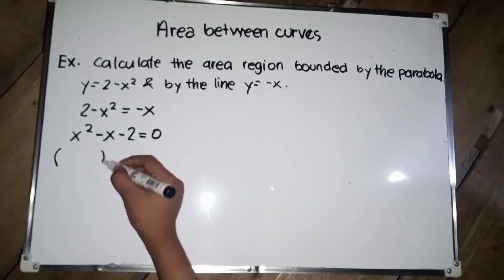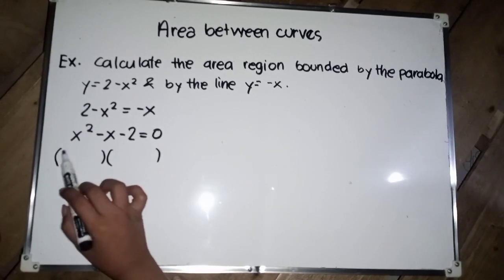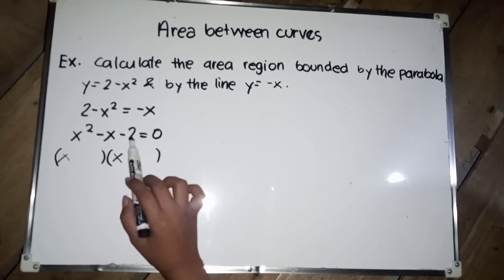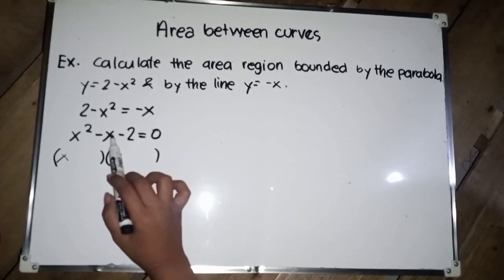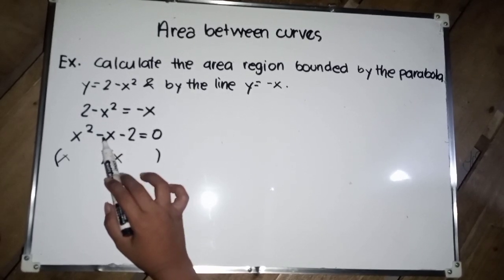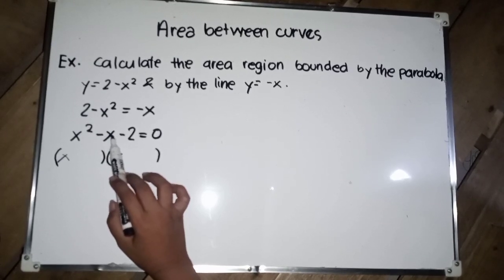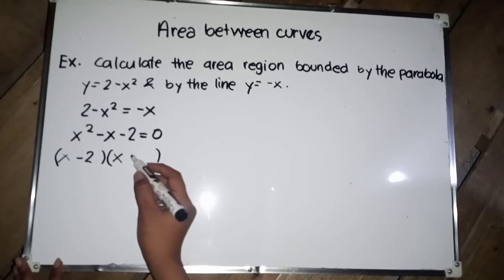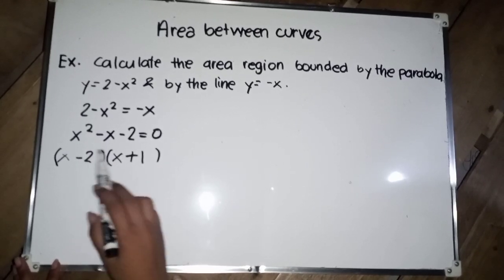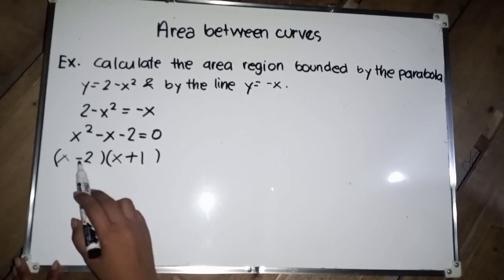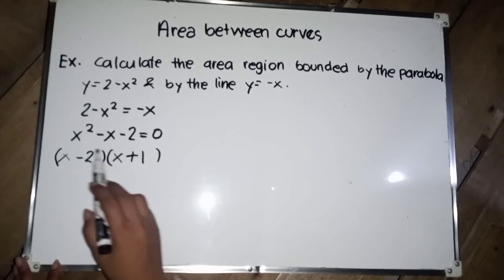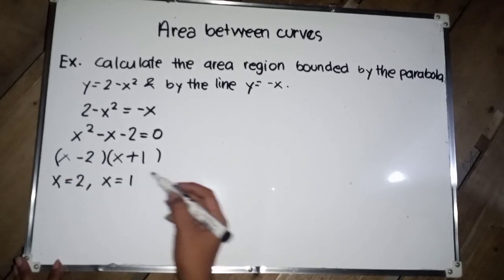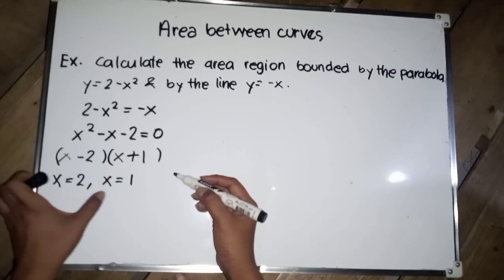We factor x squared minus x minus 2 = 0 to find the bounds. We look for values that multiply to negative 2 and add to negative 1: that's negative 2 and positive 1. So x = 2 and x = negative 1 are the bounds.